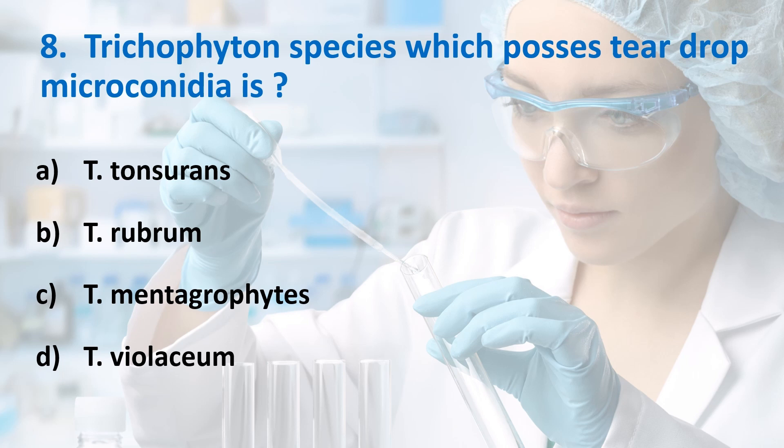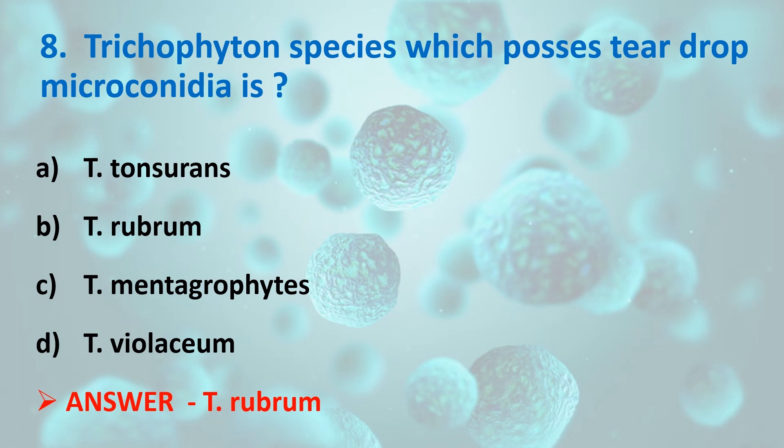Eighth question: Which Trichophyton species possesses teardrop microconidia? Options: T. tonsurans, T. rubrum, T. mentagrophytes, T. violaceum. Answer is Option B, Trichophyton rubrum, which causes athlete's foot disease (Tinea pedis) and also Tinea corporis. T. mentagrophytes has cigar-shaped microconidia and produces spiral hyphae; T. tonsurans has pear-shaped microconidia; T. violaceum causes Tinea capitis.